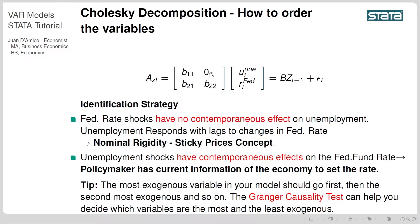These two elements of the matrix correspond to unemployment on unemployment, and the fed rate effect on unemployment. You can see that the fed rate effect on unemployment in the short run is zero — this means the fed rate will have no contemporaneous effect. However, unemployment shocks do have contemporaneous effects on the fed funds rate, because the policymaker has current information about the economy to set the rate. Unemployment affects the fed rate, the fed rate affects itself, because the fed is using this information contemporaneously.